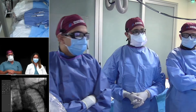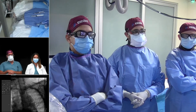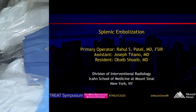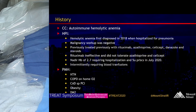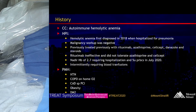We're going to be presenting a case of splenic artery embolization. It's a 65-year-old gentleman who came to us referred by his hematologist for autoimmune hemolytic anemia. He was first diagnosed in 2018 when he was hospitalized for pneumonia. Malignancy workup at that time was negative.